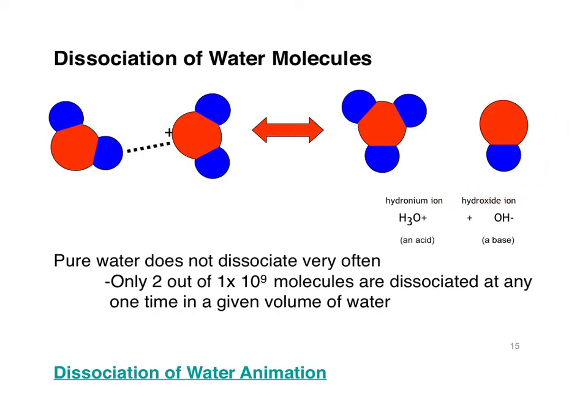Water does dissociate, but it doesn't dissociate very often — only about two out of a billion water molecules are actually dissociated at any one time. So most of the time, H2O is what's present, but every now and then that water molecule will break apart into hydronium and hydroxide. For simplicity, we'll refer to hydronium H3O+ as just H+. If you see hydronium, just think about H+.